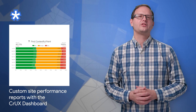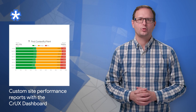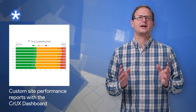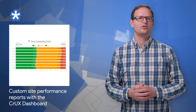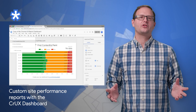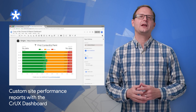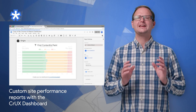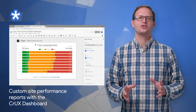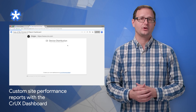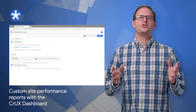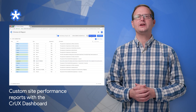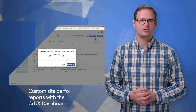We recently released the Chrome UX Report dashboard to help you better understand how an origin's performance evolves. It's built on Data Studio and automatically syncs with the latest data sets, and can be easily customized and shared with everyone on your team. For screenshots and a video on how to set it up, take a look at the post.